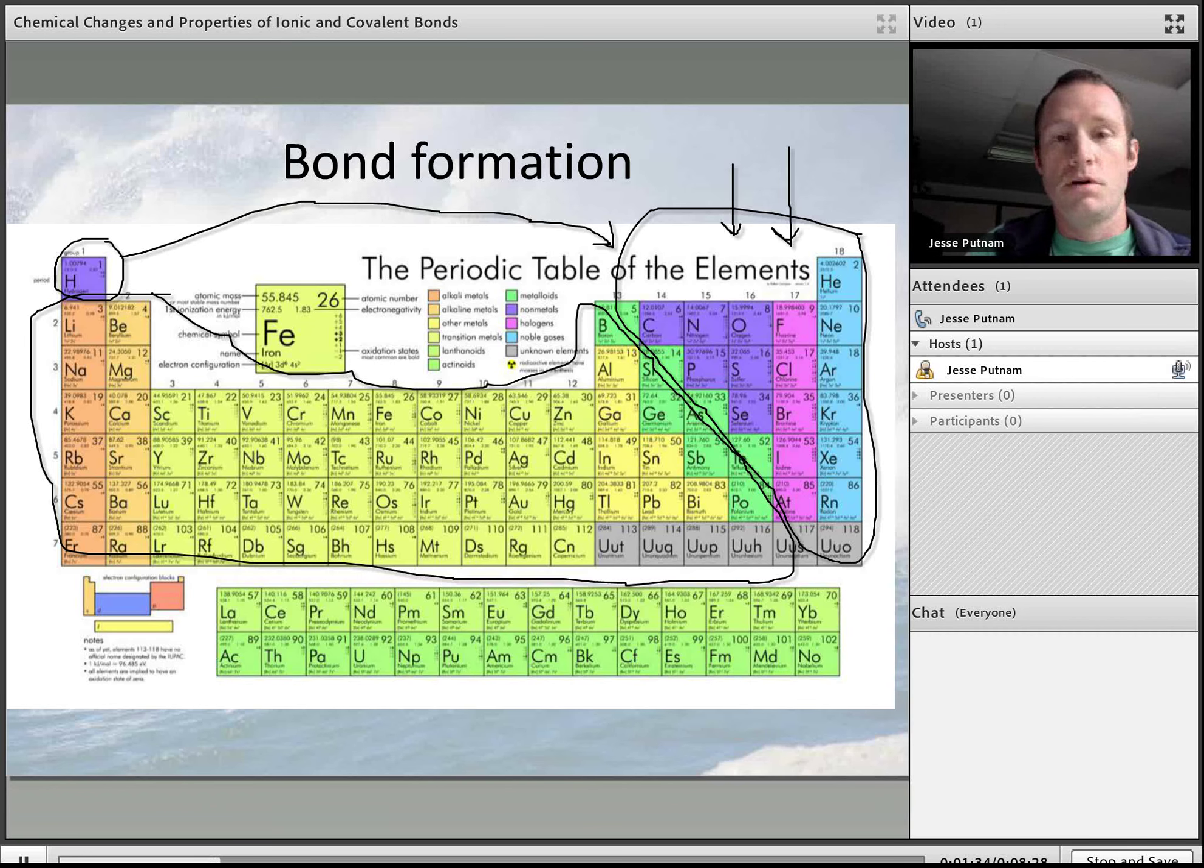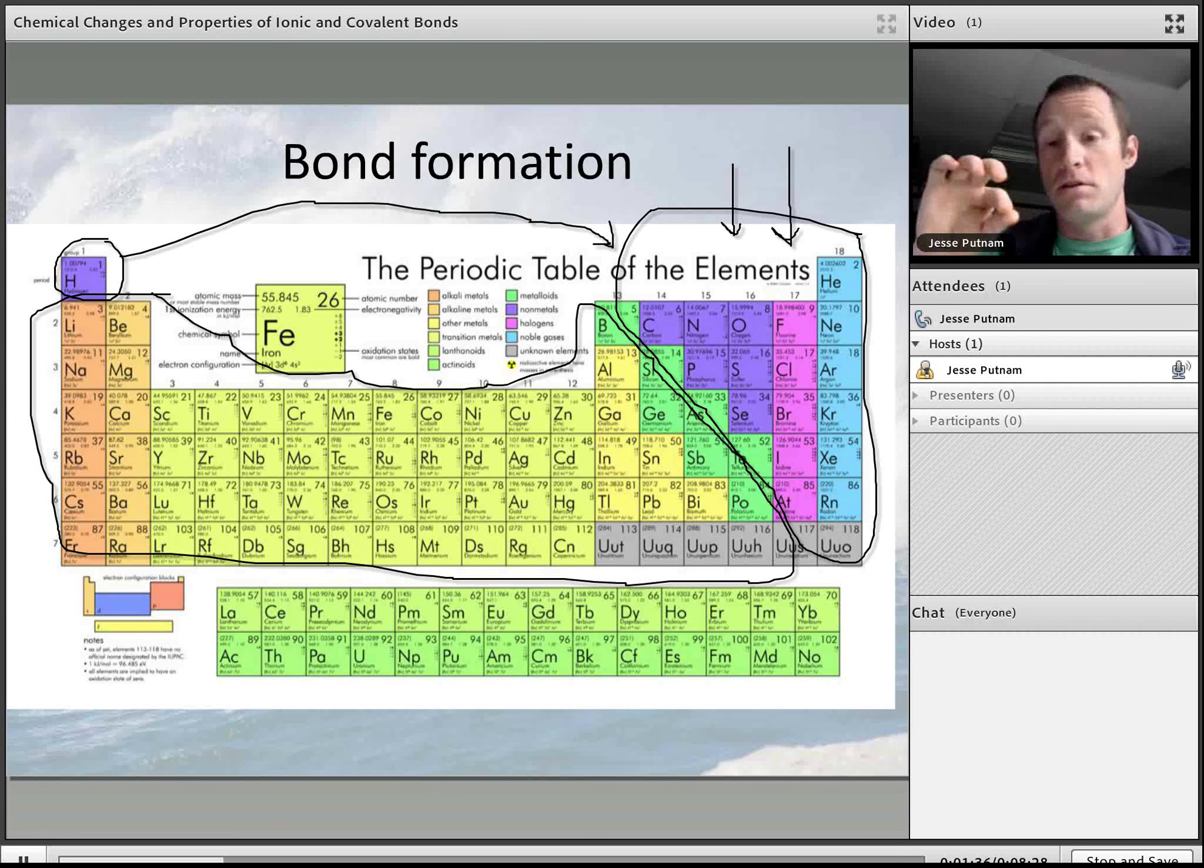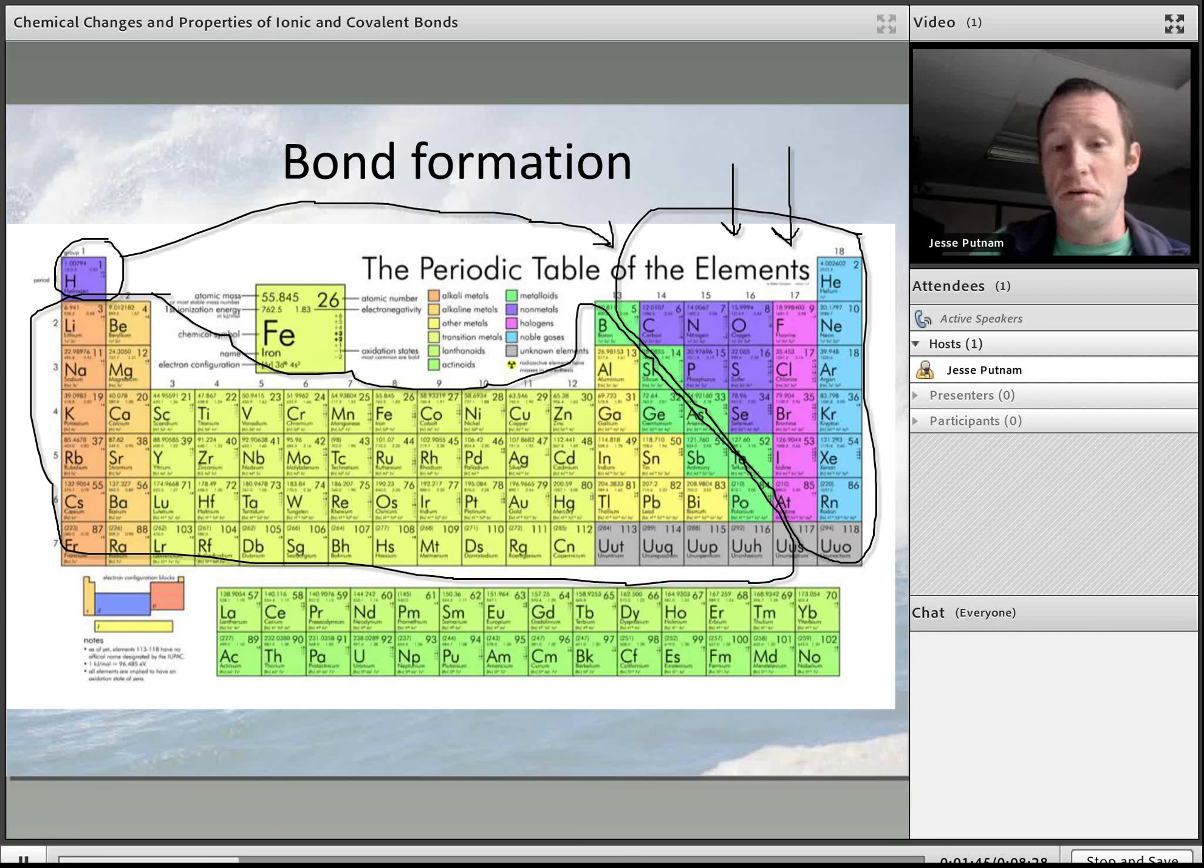So covalently bonded substances are always nonmetals with other nonmetals. An example of course would be chlorine gas where two chlorines get together with each other, or water H2O where you have two hydrogens combining with one oxygen.